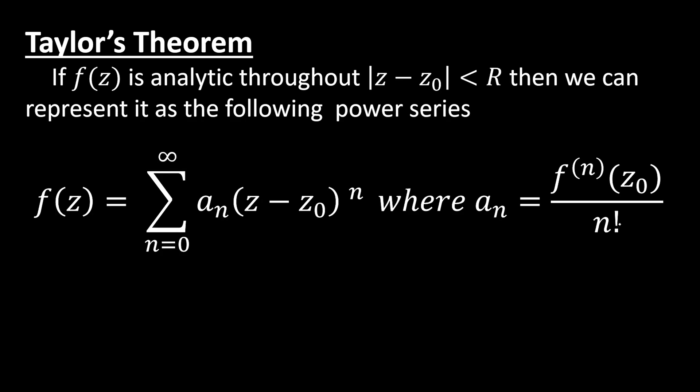Taylor's theorem in complex analysis for complex functions is more or less exactly the same as it is for real functions. The only thing is we need to make sure that our complex function is analytic throughout a disk |z - z₀| < R, basically meaning it has to be finite. If that's the case, then we can rewrite that function as a Taylor series approximation, and I have this written out right here, and you'll notice this aₙ right here.